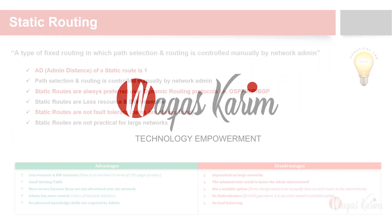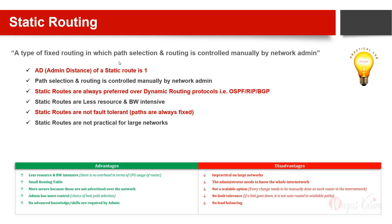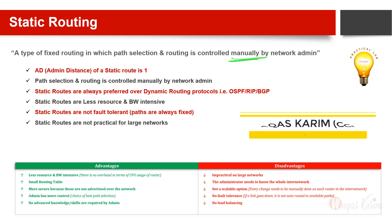Static routing is a type of fixed routing in which path selection and routing is controlled by the network admin, which means it is not dynamically controlled — it is manually controlled. This gives us more control as a network admin when doing configuration on network devices, on routers, on Cisco routers or Huawei routers. In contrast, with dynamic routing we have less control because routing is controlled by the routing protocol.